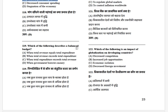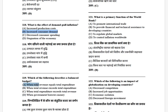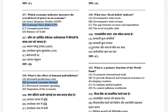Which of the following describes a balanced budget? Options: when total revenue equals total expenditure, when total revenue exceeds total expenditure, when total expenditure exceeds total revenue, and when the government borrows money. The answer is when total revenue equals total expenditure.